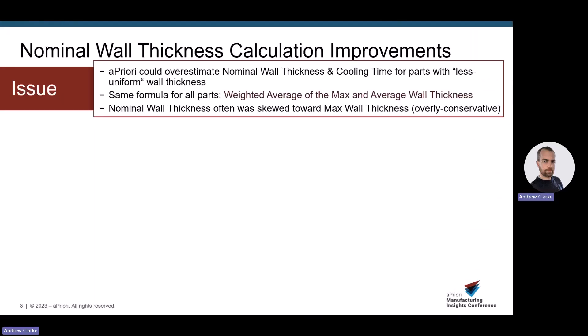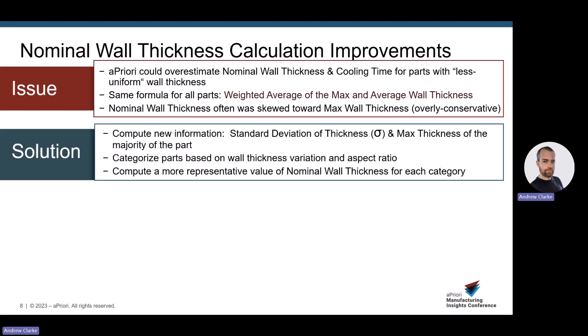To account for variances in wall thickness, Apriori passes in a variable known as nominal wall thickness for the thickness in the equation. Nominal wall thickness is a representation of the part's general thickness. In versions previous to 21.1, Apriori used a weighted average using average wall thickness and maximum wall thickness. It was found to be overly conservative for parts with very thick sections, especially when they are significantly localized.